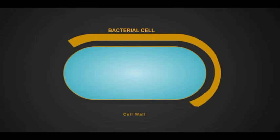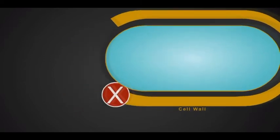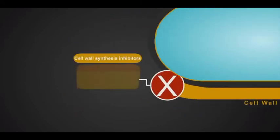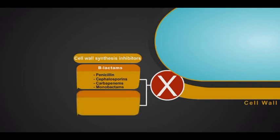For example, they can disturb the cell wall synthesis. The cell wall inhibitors include the beta-lactam antibiotics such as penicillins, cephalosporins, carbapenems, and monobactam groups. Non-beta-lactam cell wall inhibitors include vancomycin and daptomycin.